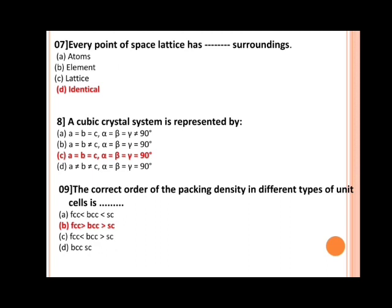Next, the correct order of the packing density in different types of unit cells is dash. Options are: a) FCC < BCC < SC; b) FCC > BCC > SC; c) FCC < BCC > SC; d) BCC = SC. The correct answer is b, FCC greater than BCC greater than SC.